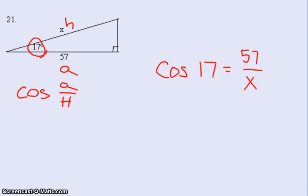So now again to solve this, you take whatever's in the denominator, multiply it by both sides. The X's cancel on the right. You're left with 57. On the left, you have X times the cosine of 17.